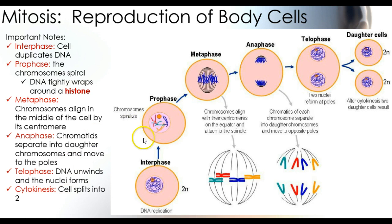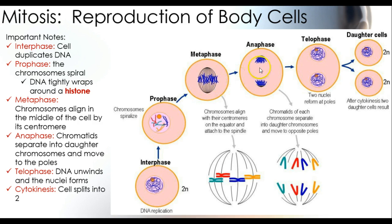Prophase is the phase where the chromosomes spiral and the DNA tightly wraps around a protein called a histone. At metaphase, the chromosomes are now towards the middle of the cell, and we have centrioles that have spindle fibers that are starting to connect to the center of the chromosomes, called the centromere.